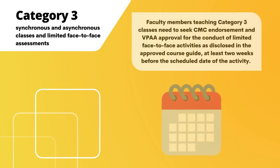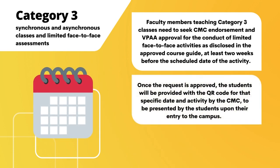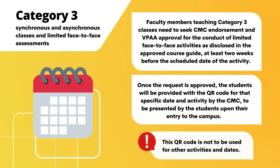Faculty members teaching Category 3 classes need to seek CMC endorsement and VPAA approval for the conduct of limited face-to-face activities as disclosed in the approved course guide, at least two weeks before the scheduled date of the activity. Once the request is approved, students will be provided with a QR code for that specific date and activity by the CMC, to be presented upon their entry to the campus. This QR code is not to be used for other activities and dates.